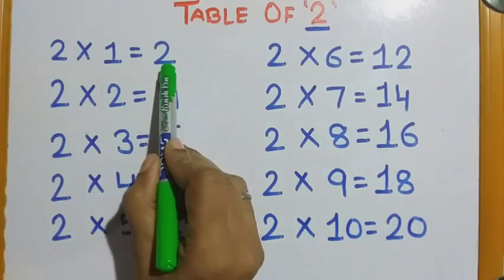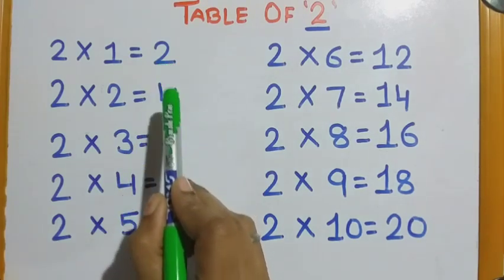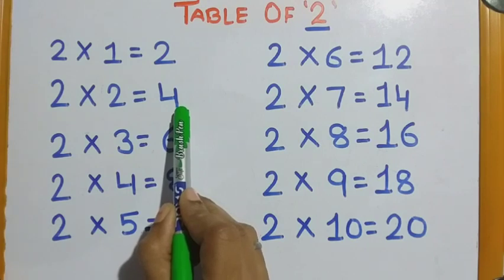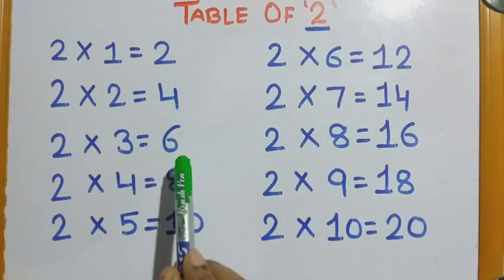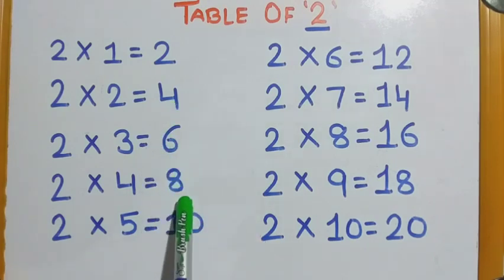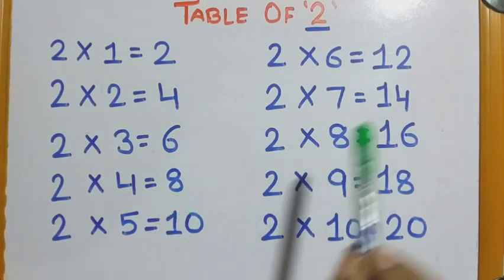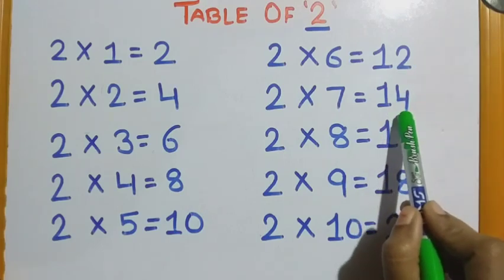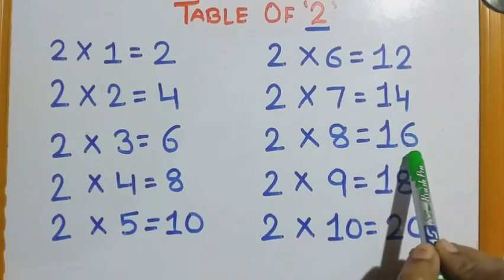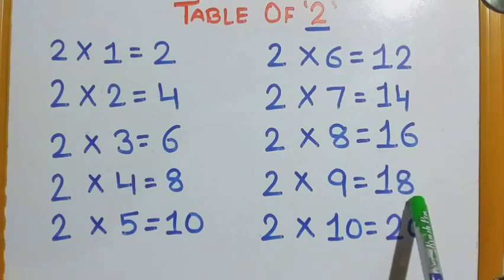Two ones are two. Two twos are four. Two threes are six. Two fours are eight. Two fives are ten. Two sixes are twelve. Two sevens are fourteen. Two eights are sixteen. Two nines are eighteen. Two tens are twenty.